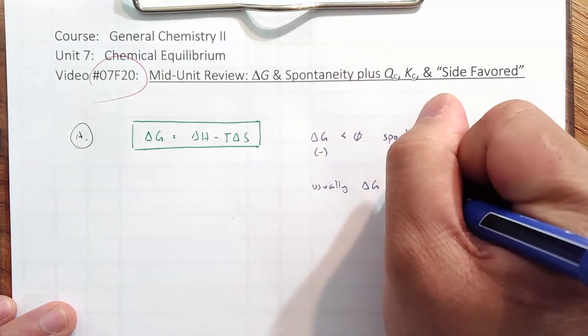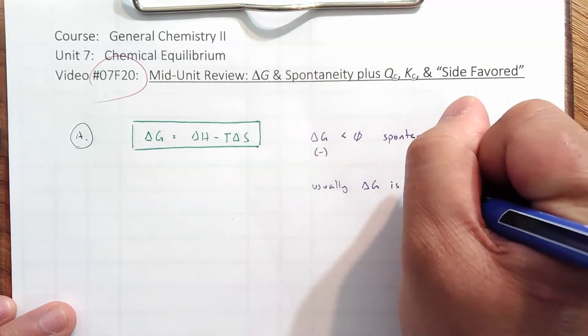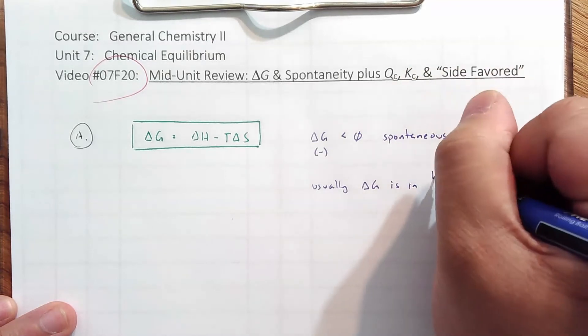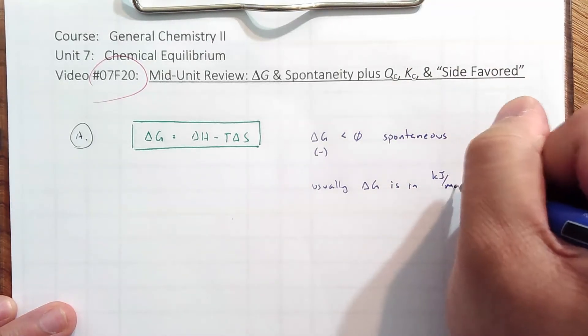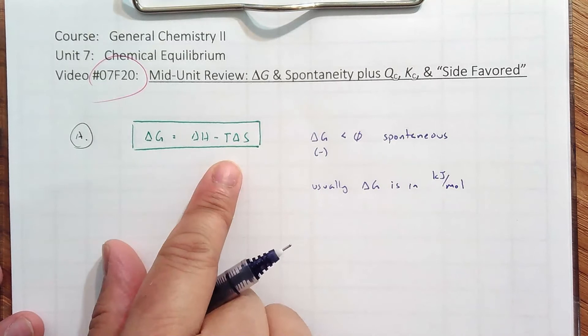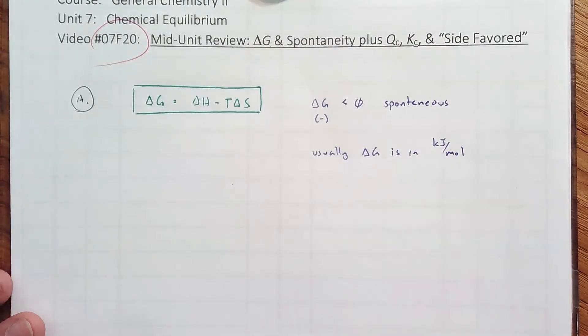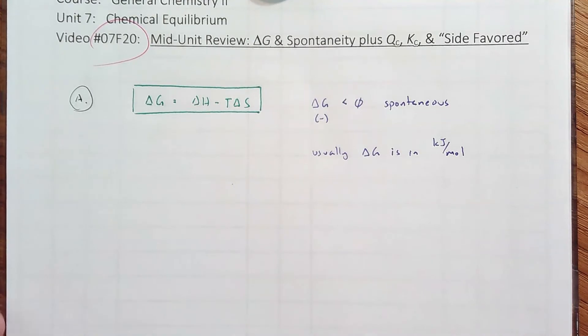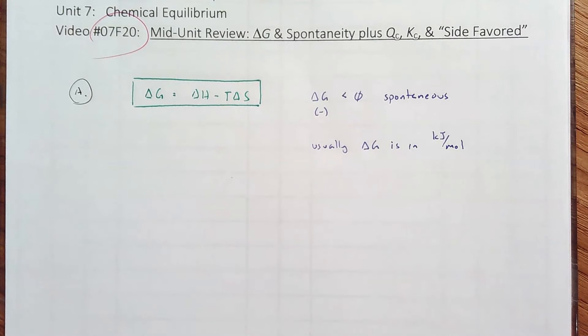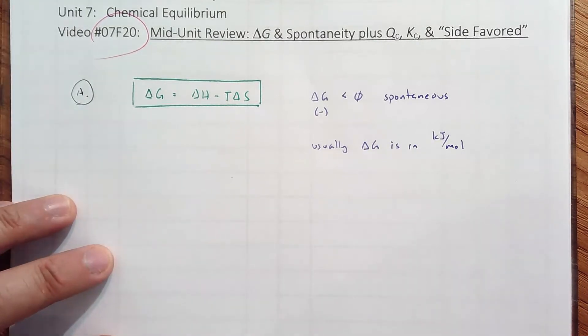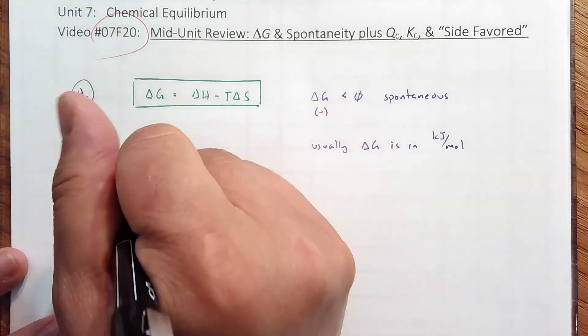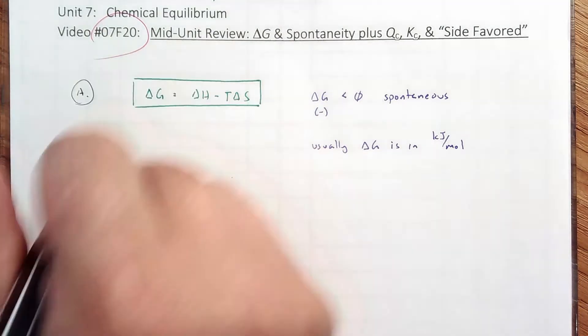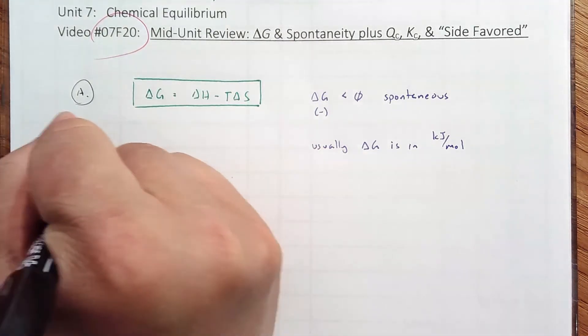So you'll be doing calculations where you'll be given or solving for delta-H and delta-S, and then deciding whether the reaction is spontaneous or not based on the sign of delta-G. Usually, delta-G is in kilojoules per mole. Just make sure that your units agree, especially if they give entropy as joules per mole dot K.